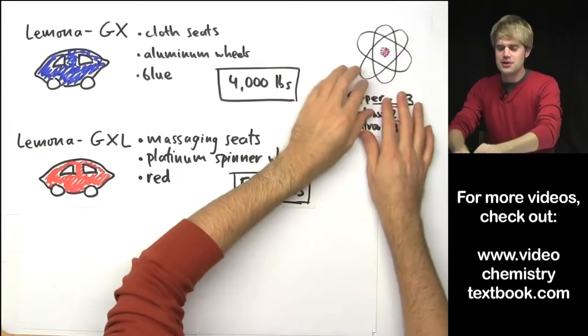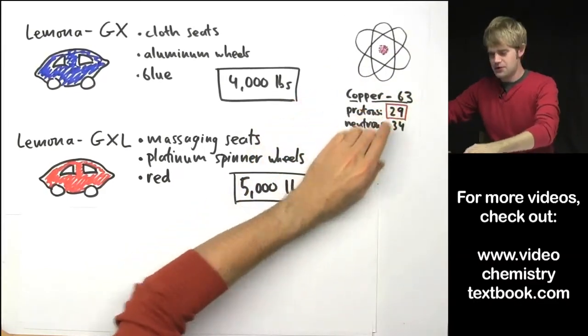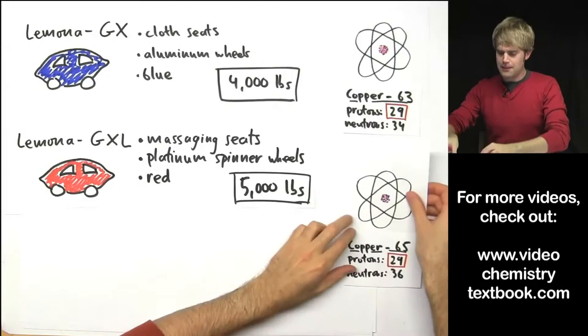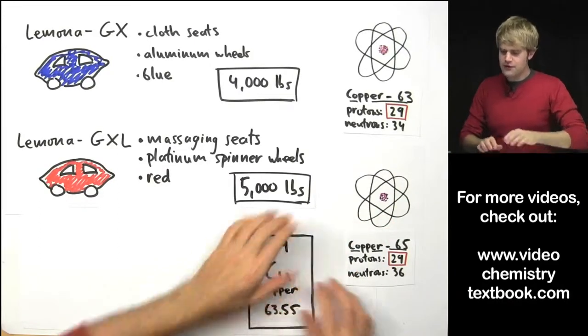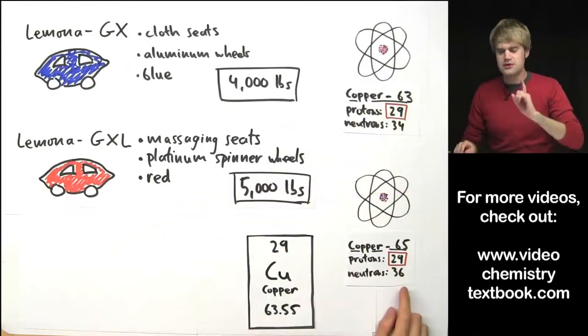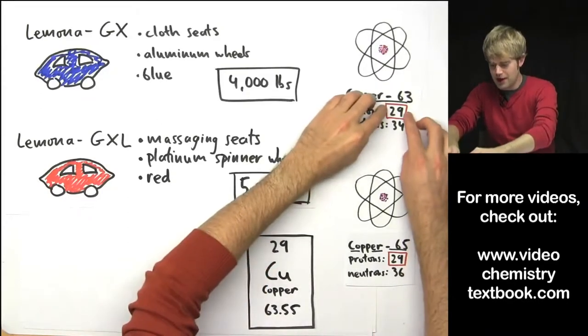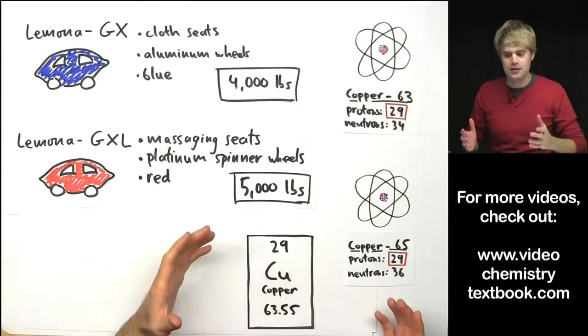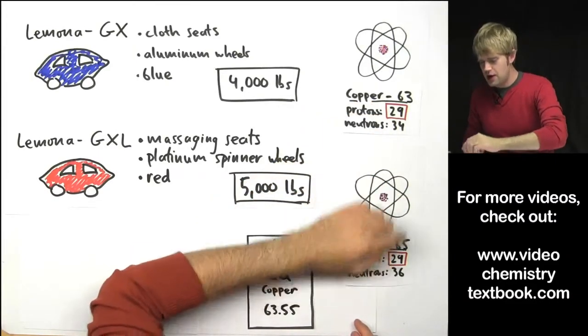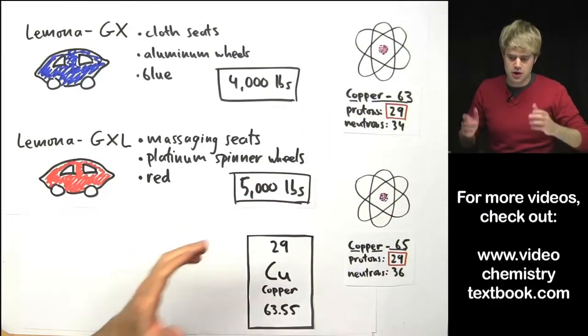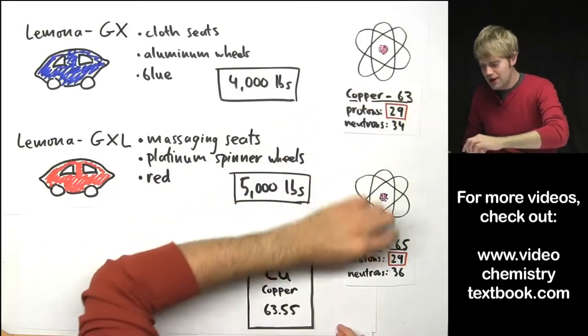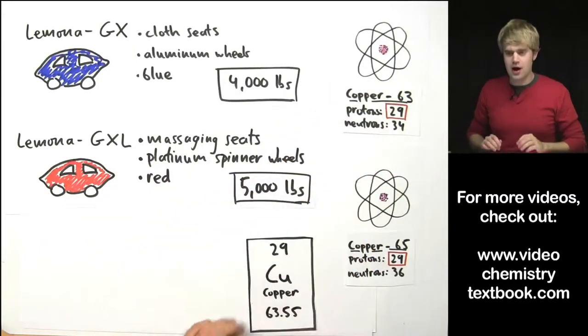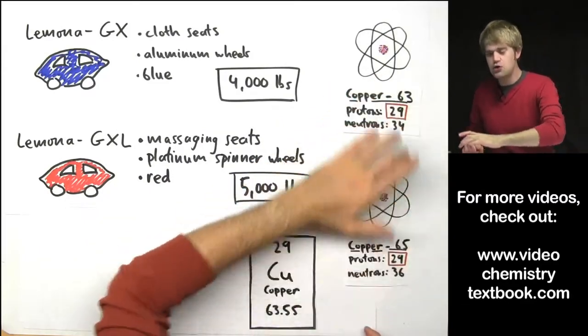Copper for example comes in two models, copper-63 and copper-65. Both of these isotopes of copper have the same number of protons, 29, because the atomic number of copper is 29 but they have different numbers of neutrons. So, just as long as you have 29 protons it makes you copper. It doesn't matter how many neutrons you have.